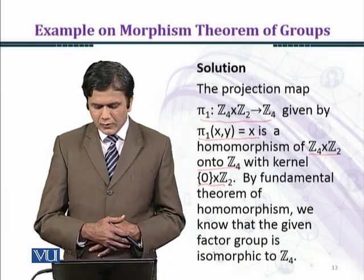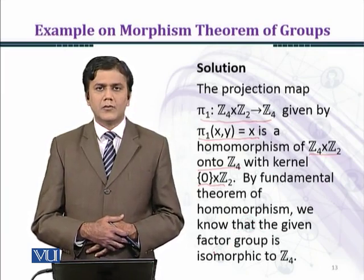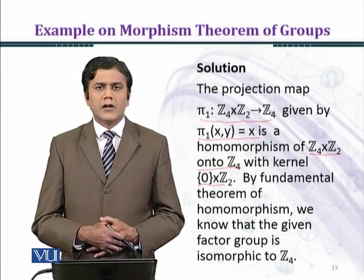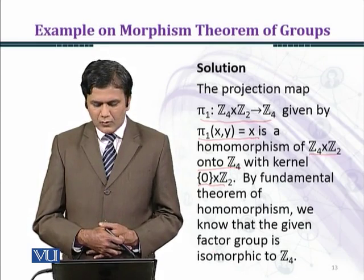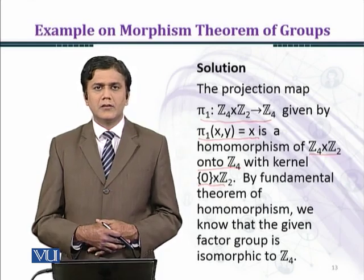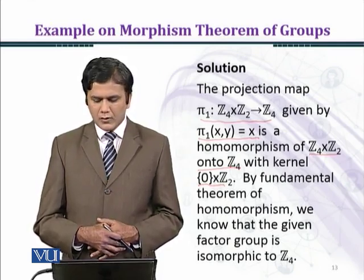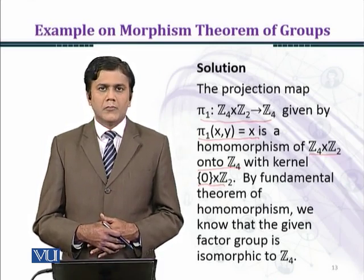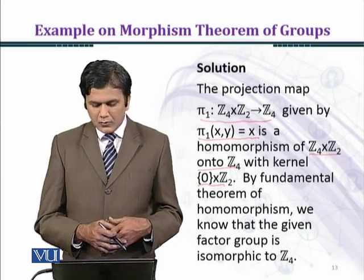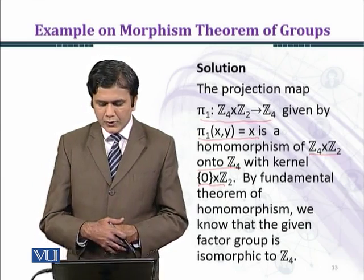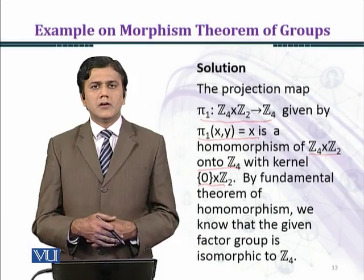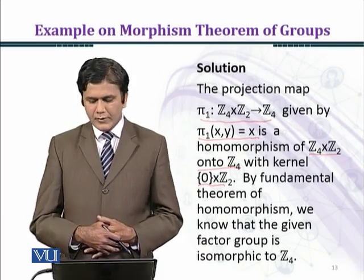By the fundamental theorem of homomorphism, we know that the given factor group is isomorphic to Z4. Because we have seen that 0 cross Z2 is the kernel, and when you take the quotient of Z4 cross Z2 with the kernel, by the fundamental theorem of homomorphism it is isomorphic to the image of pi1, which is Z4. So the quotient group Z4 cross Z2 has 8 elements in total.